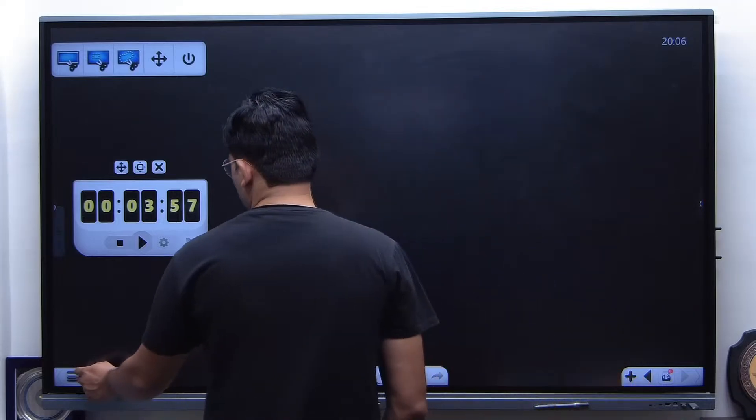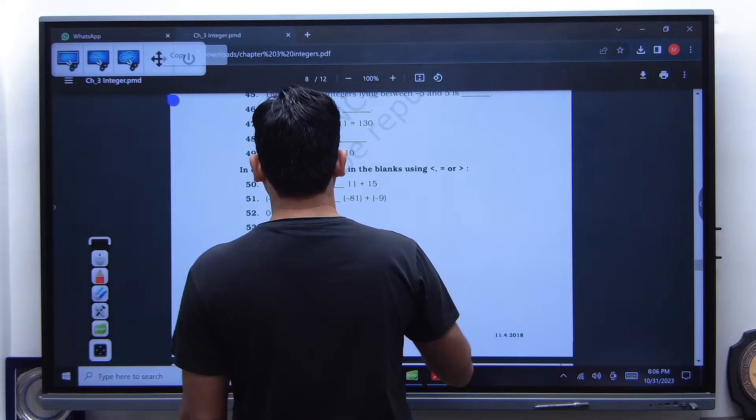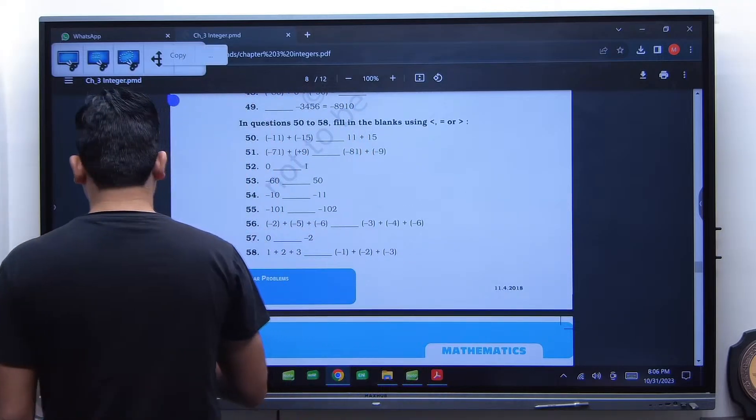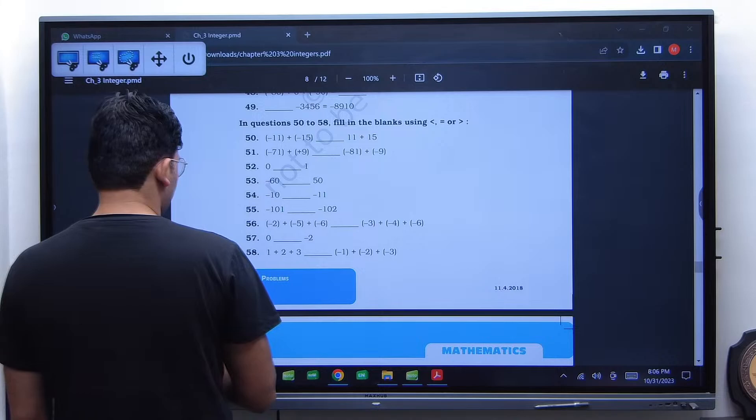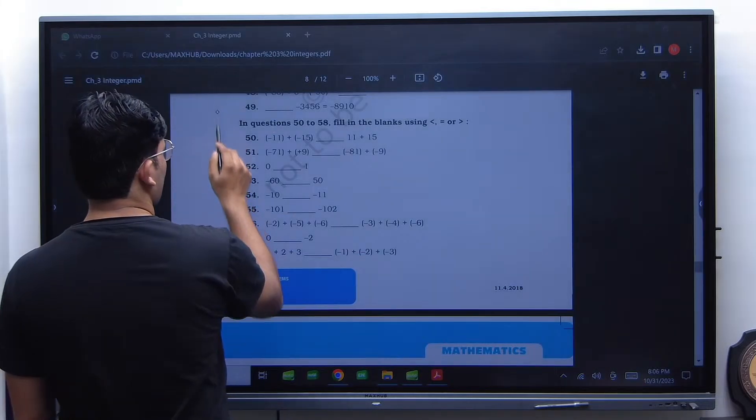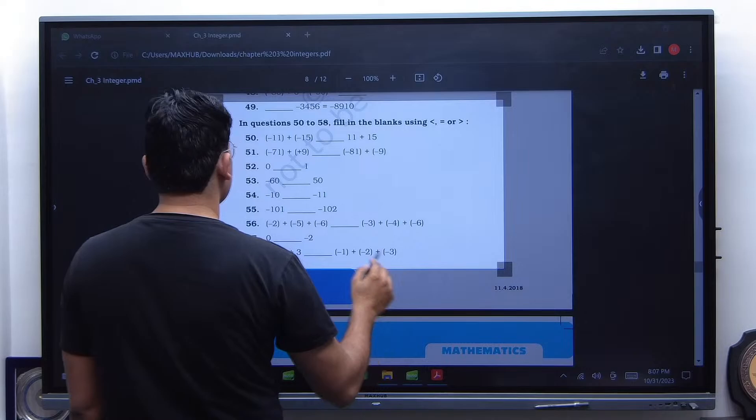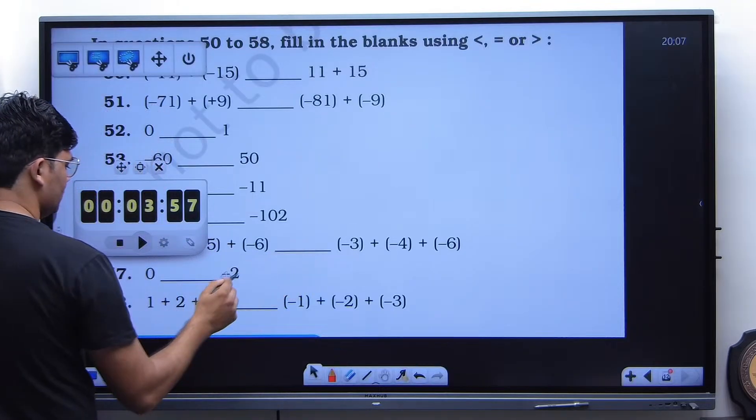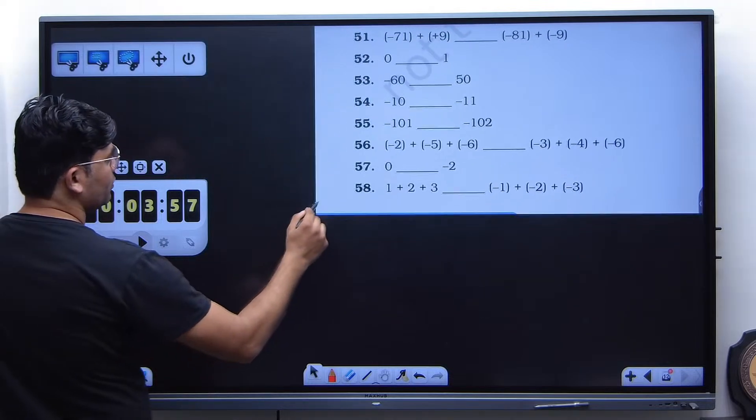So you have done 50 questions, 49 questions. So now you have to tell me the signs. Greater than, smaller than, equal to. So easy questions. You can do it. Sir, do I have to write the question?